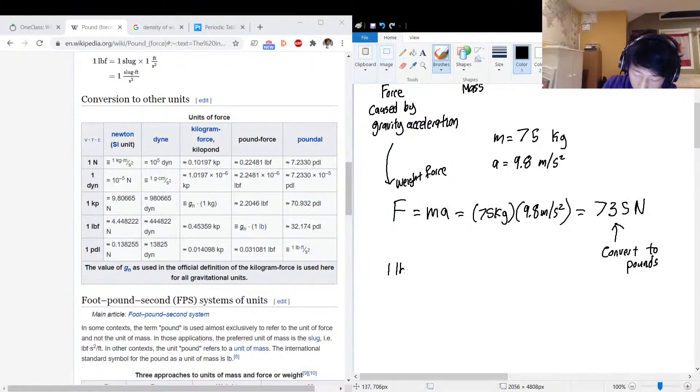One lb is equal to 4.44822 newtons. Okay, and this is our conversion factor.